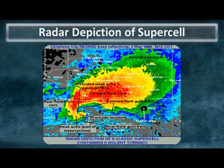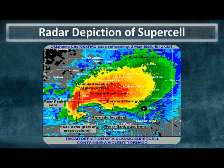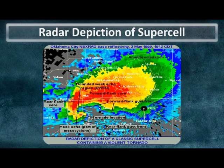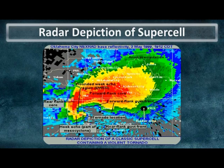Here is the classic radar depiction of a supercell thunderstorm looking at base reflectivity data. The warmer colors toward the oranges and reds indicate heavier rainfall and/or hail, corresponding to the northeast side of the storm where the downdraft region is located. As we work back toward the west and southwest portions of the storm, we get this distinct feature called a hook echo. Our rotating updraft is where we have a lack of reflectivity data — shown by the gray and very light blues — and all the rain and hail is being wrapped around the backside. A tornado from one of these supercells would be on the south flank of the hook echo.